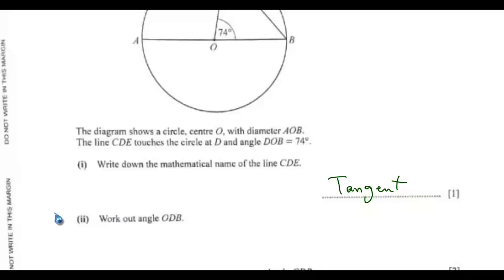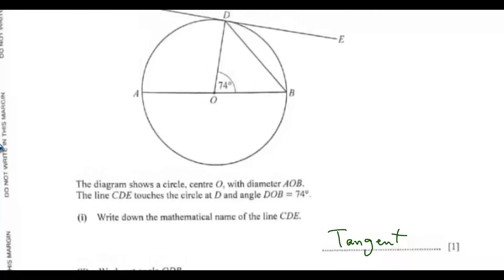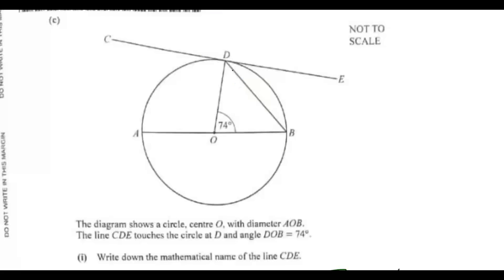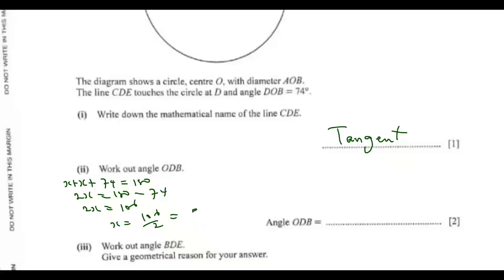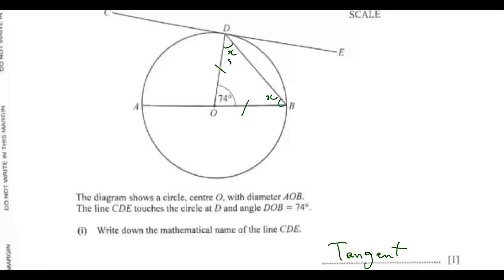Work out angle ODB. This is the angle we want to get — call it x. Since OD and OB are radii, they are equal, so this side is also x. We get x plus x plus 74 equals 180 degrees, so 2x equals 106, and x equals 53 degrees. So angle ODB is 53 degrees.